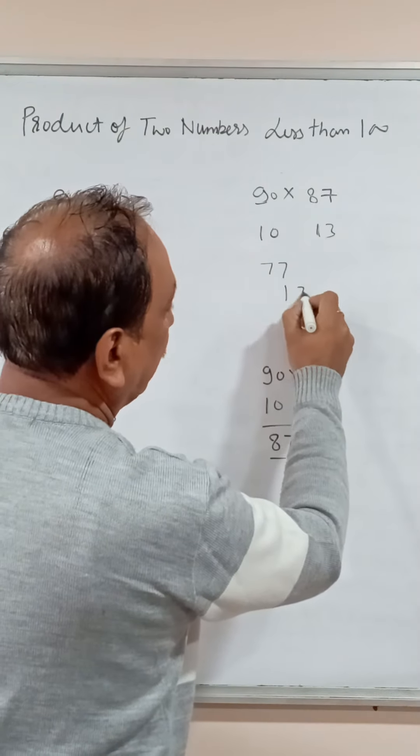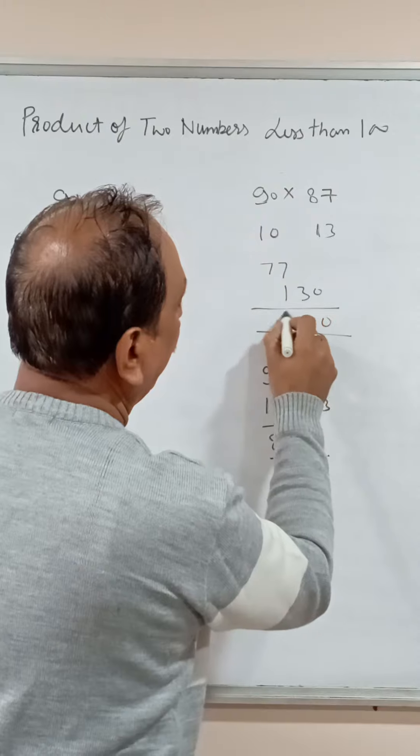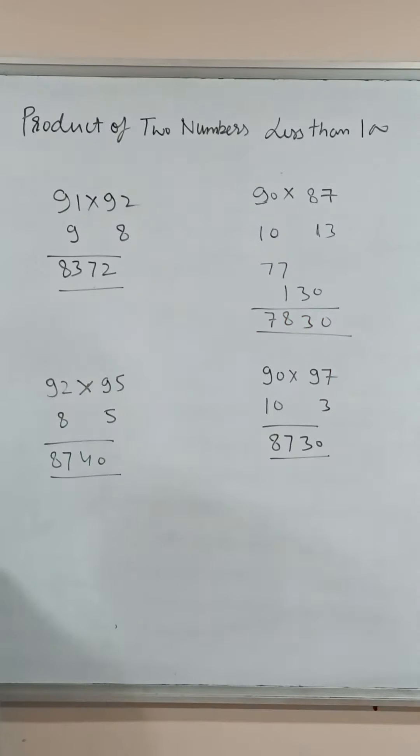So we will put it in the next place. Add them. 7,830 is product of 90 and 87.